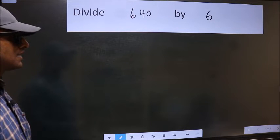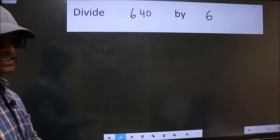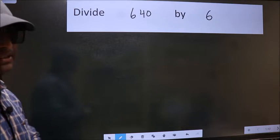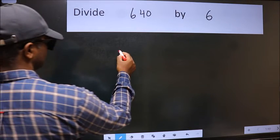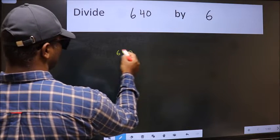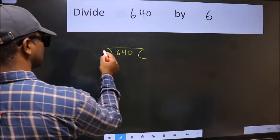Divide 640 by 6. To do this division, we should frame it in this way: 640 here and 6 here.